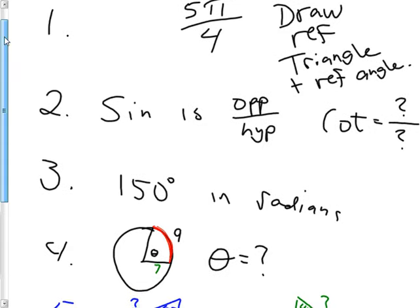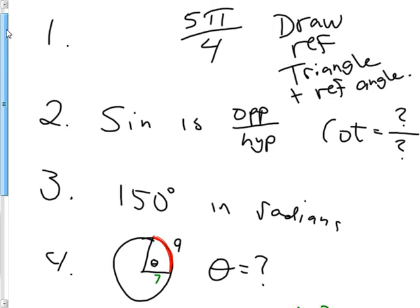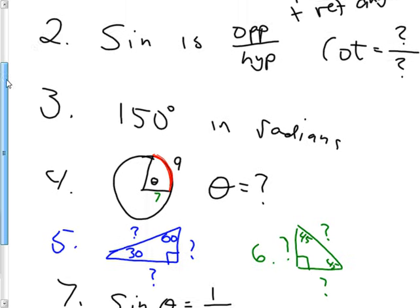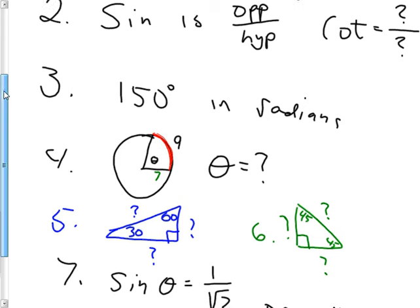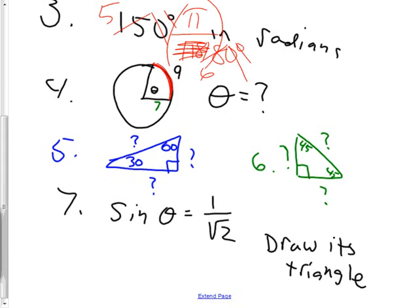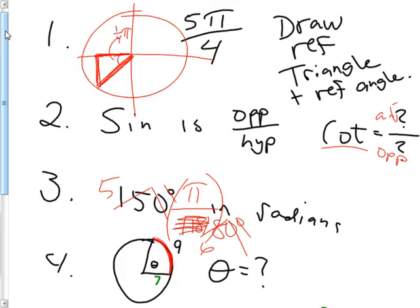I'm hoping for a lot of six out of sevens. If you haven't already written down number one, write it down quick because I've got to scroll down. I just need to know on number one where's 5 pi over 4, and what reference angle and triangle would go with it. I'll pause for a minute while you work on those. Try to get six out of seven right or better. Starting to give you some answers: number one, the reference triangle was right there, and the reference angle was one-fourth of pi, or 45 degrees.